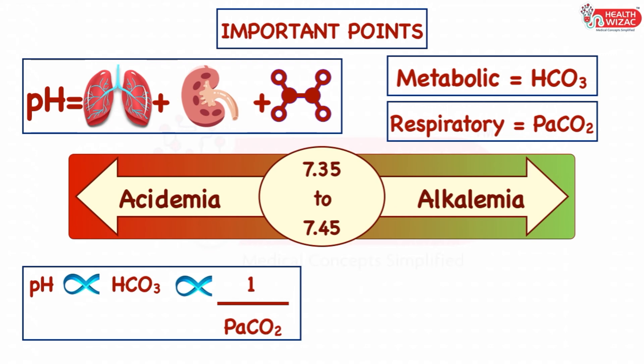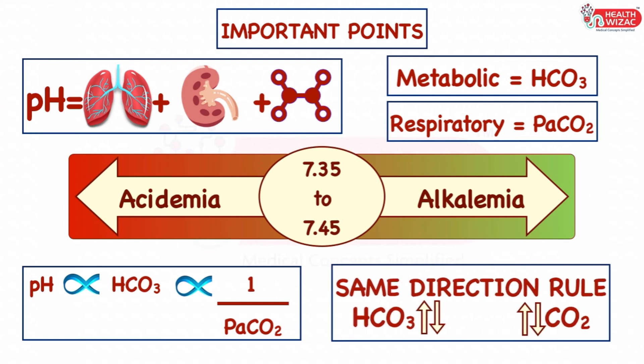Compensation always happens in the same direction. That is, a fall in bicarbonate is compensated by a decrease in PaCO2 level, whereas a rise in bicarbonate is compensated by an increase in PaCO2 level, and vice versa.